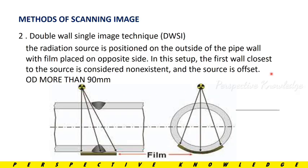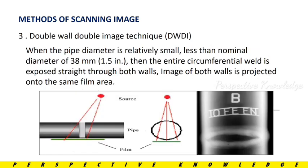For pipes more than 90 mm, we can offset the source. The third technique is the Double Wall Double Image technique — for smaller pipes. We fix the radiation source on one side, place the film on the opposite side, and capture two images in one output. We scan the area and circle any defects found.